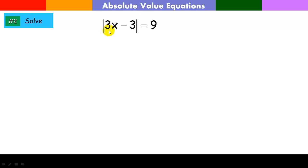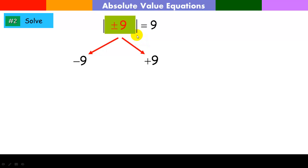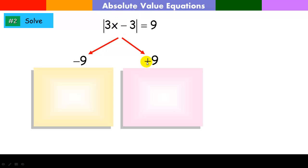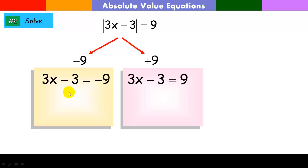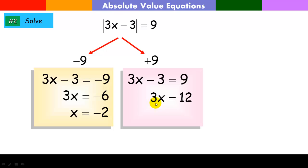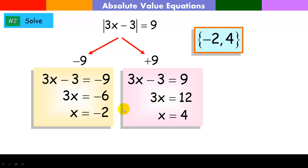Again, we're looking for a value of x that will make the expression 9 units away from 0. So the expression itself has to equal either positive 9 or negative 9. I set up: 3x minus 3 equals negative 9, and 3x minus 3 equals positive 9. Adding 3 to both sides then dividing by 3: one solution is negative 2. For the other equation, add 3 and divide by 3: the solution is 4. So the solution set is negative 2 and 4.